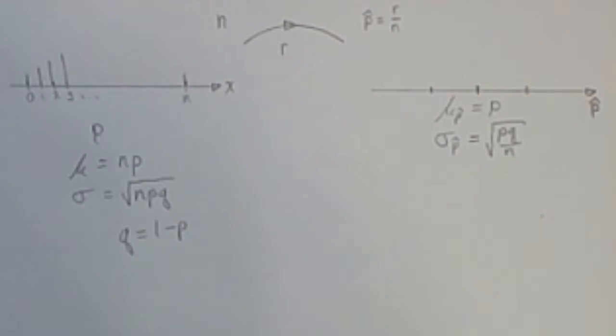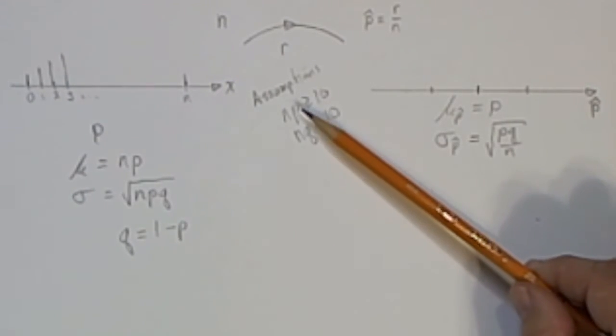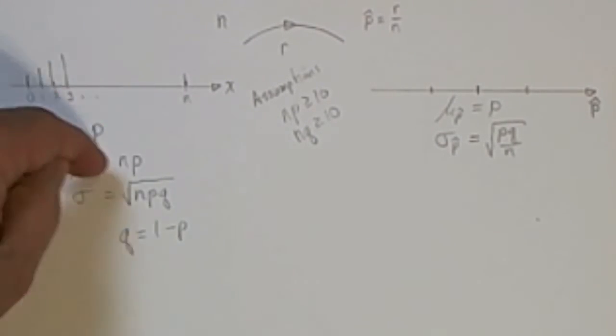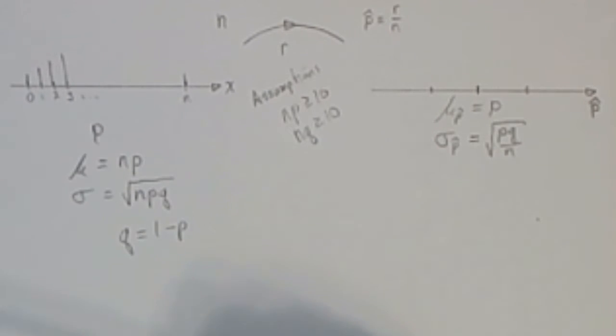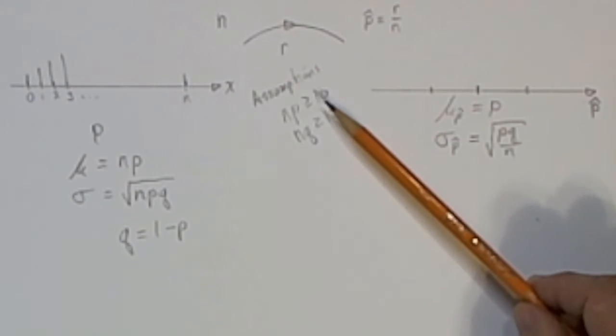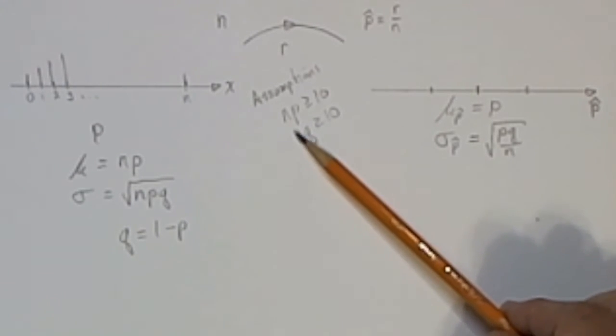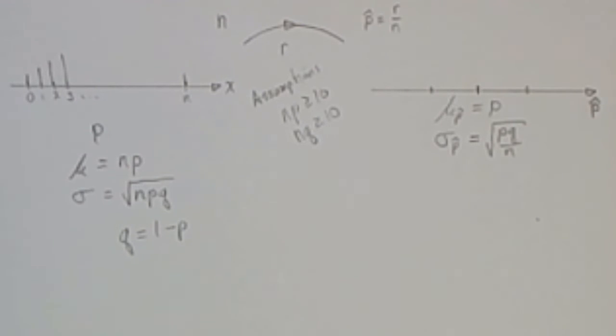If certain assumptions are satisfied, we can pretty much guarantee that this distribution of sample proportions is normally distributed. Those assumptions are that n times p is greater than 10, and the number of failures is also greater than 10.